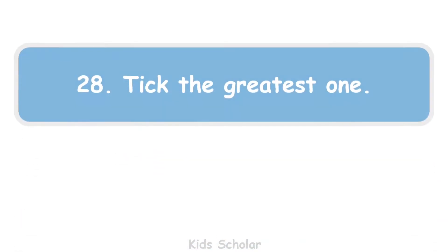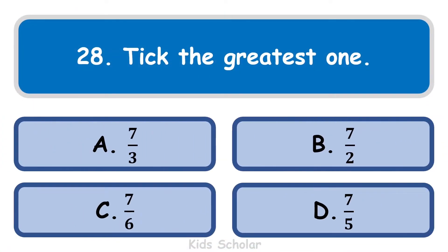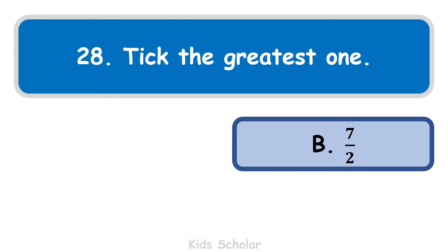Next question is: tick the greatest fraction. The options are 7 by 3, 7 by 2, 7 by 6, and 7 by 5. All fractions have the same numerator, so in this case the fraction with the smallest denominator is the greatest. Since 2 is the smallest denominator, 7 by 2 is the greatest.